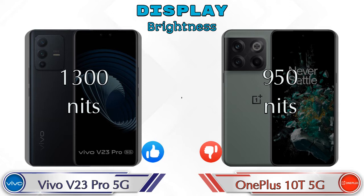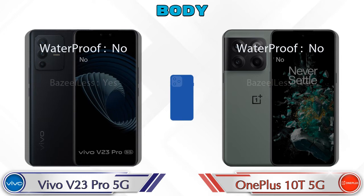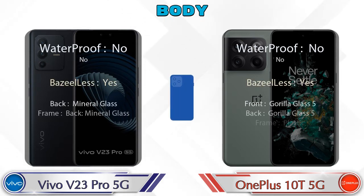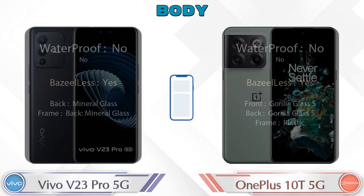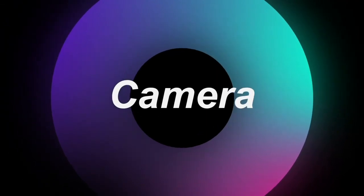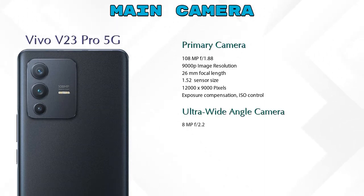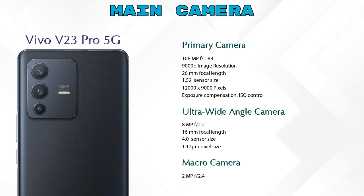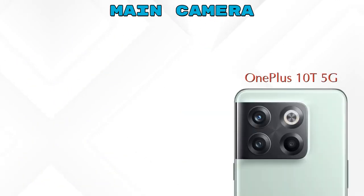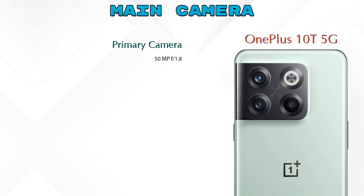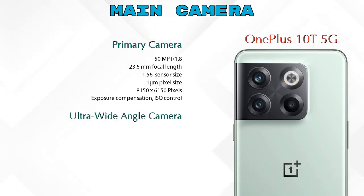Now let's see the complete details about the body of both phones. Moving on to our favorite feature — cameras. For the rear camera, the Vivo V23 Pro 5G has three cameras: a primary camera, an ultra-wide angle camera, and a macro camera. The OnePlus 10T 5G also has three cameras: a primary camera, an ultra-wide angle camera, and a macro camera.